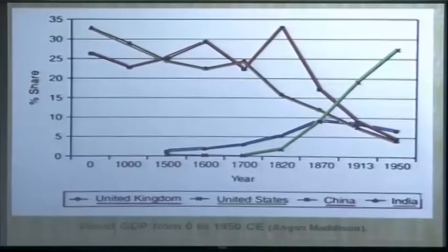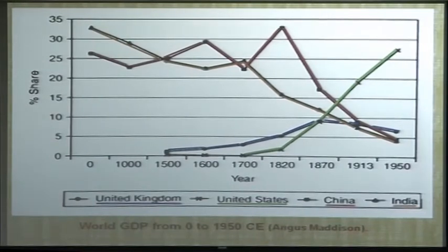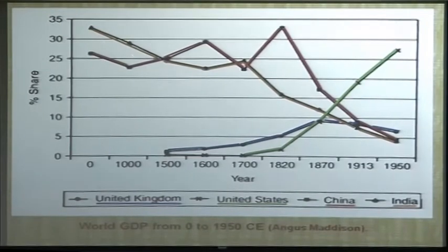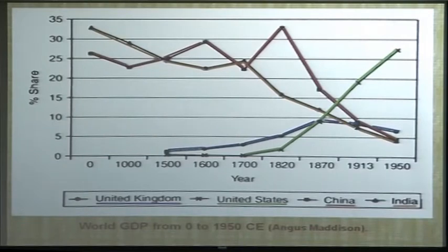This economic dominance is illustrated in a chart by economist Angus Maddison, who reconstructed world trade from the year zero using all possible sources — texts, archaeology, whatever. India had 33% of world GDP in the year zero, and China 27%, totaling 60% together. You can see how the ancient world was really dominated by these economies — Europe did not exist; it was simply nowhere in the picture.